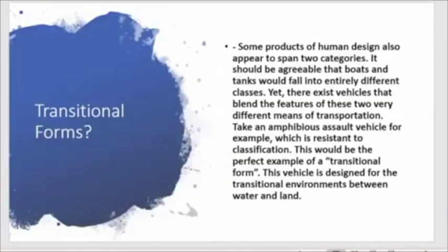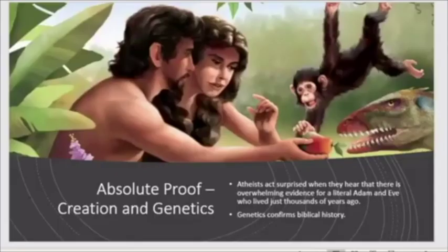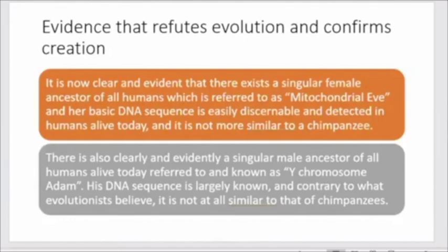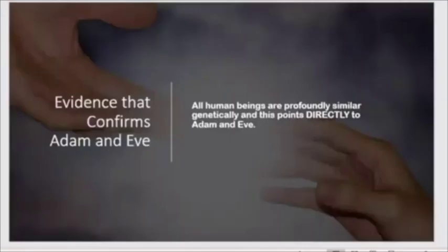The fact that there exist these natural and nested hierarchies is exactly what we'd expect if God created the world. We can see here even if we got into transitional forms, we create things that blend the features of two different types of vehicles—amphibious assault vehicles, for example. We can see here that all the evidence regarding mitochondrial DNA, Y chromosome, the low genetic diversity that we see all points to Adam and Eve.